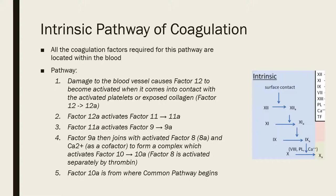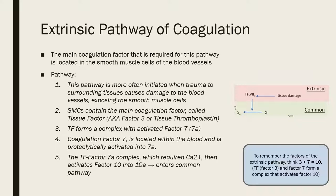A helpful mnemonic for the extrinsic pathway: think of 3 plus 7 equals 10 — factor 3 (tissue factor) and factor 7a combine to form a complex which then activates factor 10 into factor 10a.